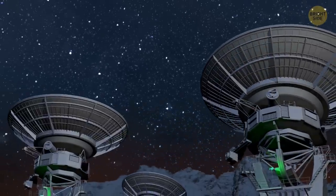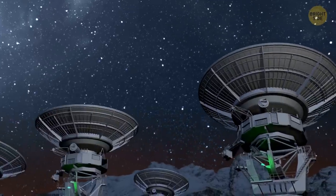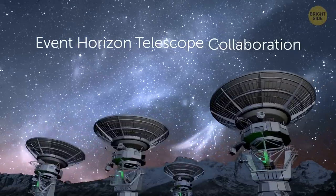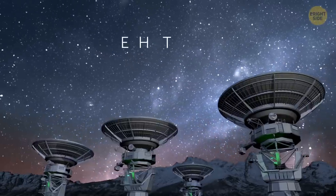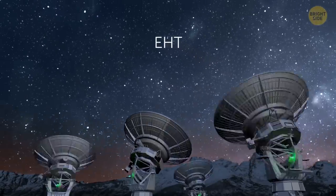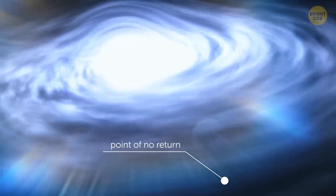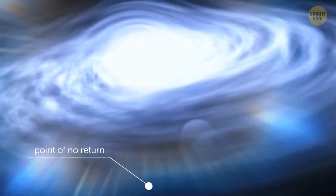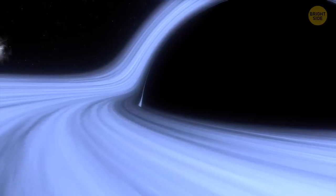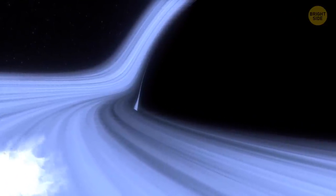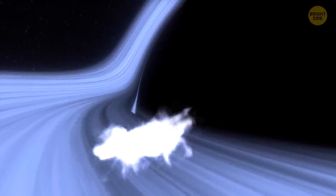We can admire this amazing space phenomenon, thanks to a vast global network of telescopes called the Event Horizon Telescope Collaboration, or simply EHT. Why such a name? The thing is that the event horizon is a point of no return on the outskirts of a black hole. When something, for example, matter, radiation, or light, reaches this boundary, there is no way for it to escape the black hole's clutches.